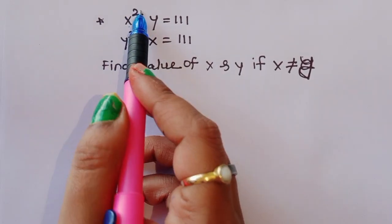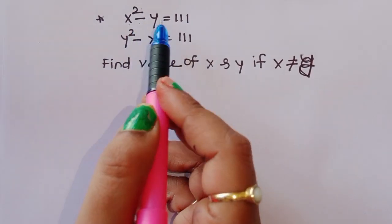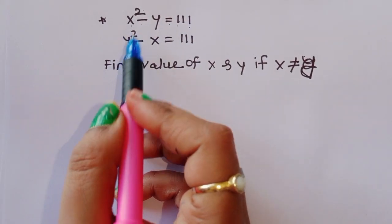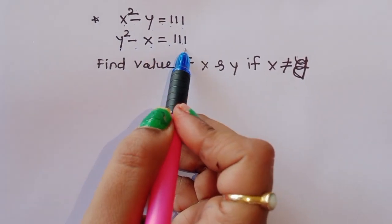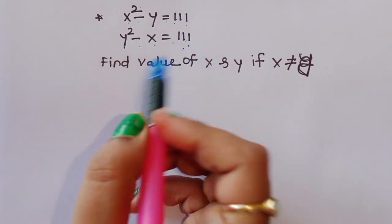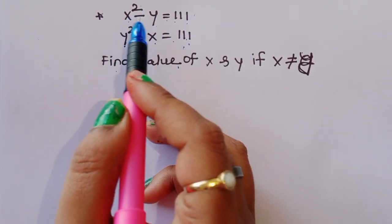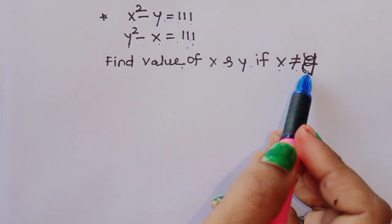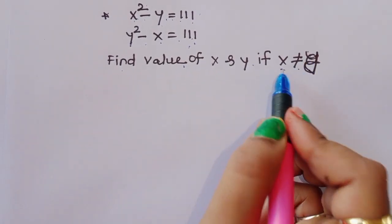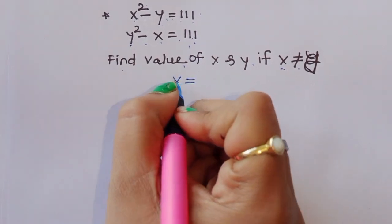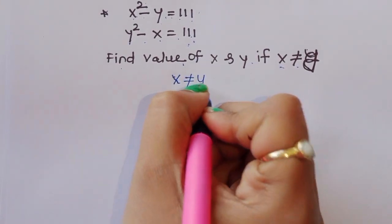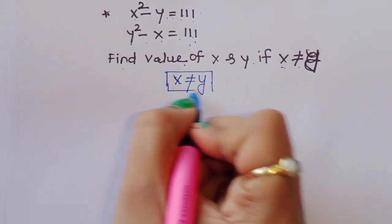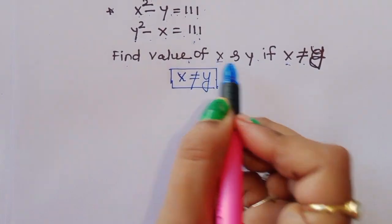The problem is given: x squared minus y equals 111, and y squared minus x equals 111. These are two equations. We have to find the value of x and y, given the condition that x is not equal to y. We need to follow this condition and find out the values.